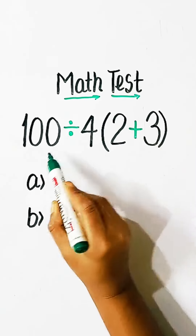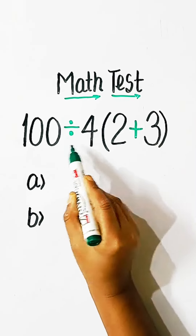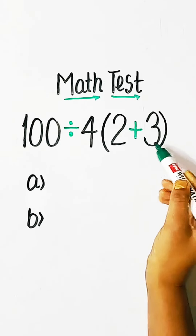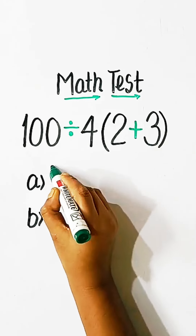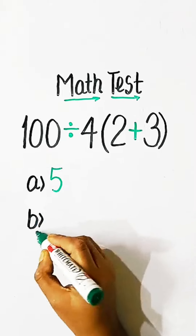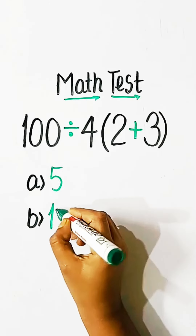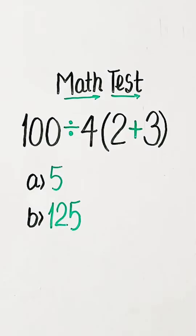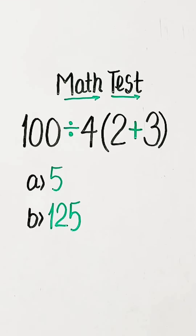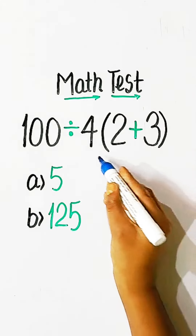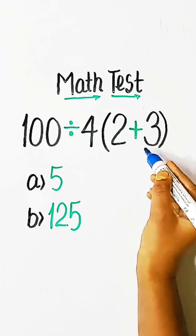Math test: 100 divided by 4 divided by 2 plus 5 equals what? Option A: 5, Option B: 125. Comment your answer. Let's check what is the correct answer.